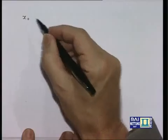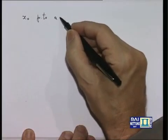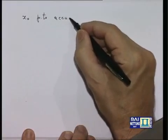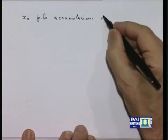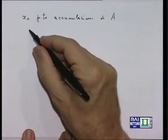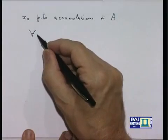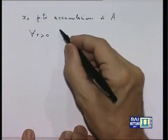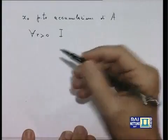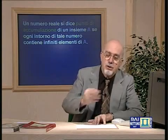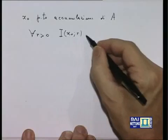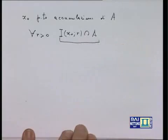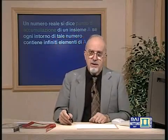Cosa vuol dire che x₀ è punto di accumulazione? Traduce l'idea che gli elementi di A si accumulano vicino a x₀. Comunque prendo il raggio R positivo, voglio che l'intersezione tra l'intorno di centro x₀ e raggio R e l'insieme A contenga infiniti elementi.